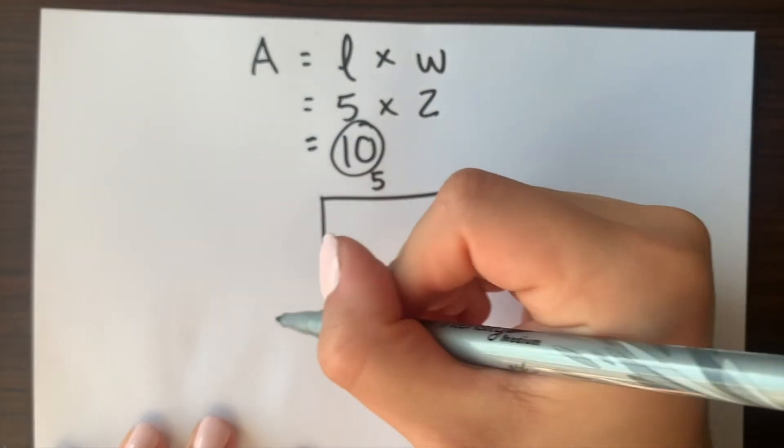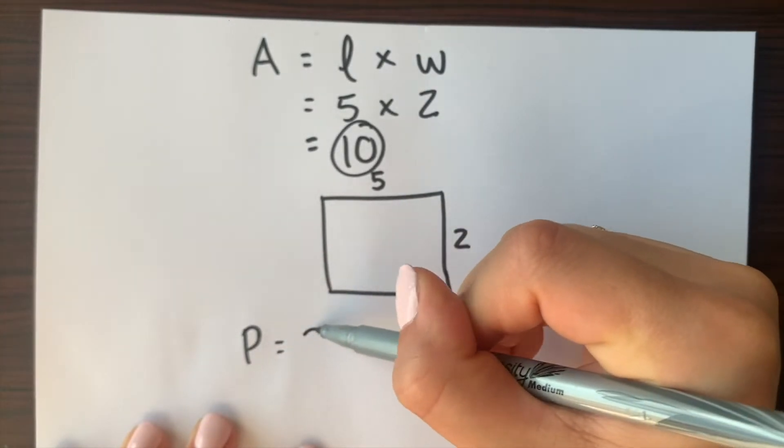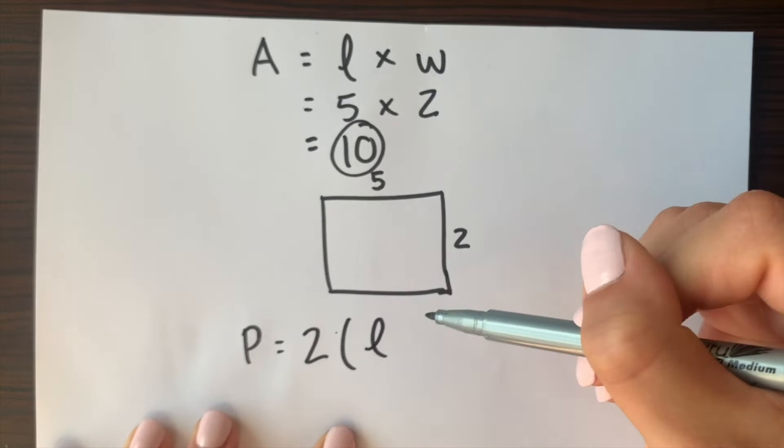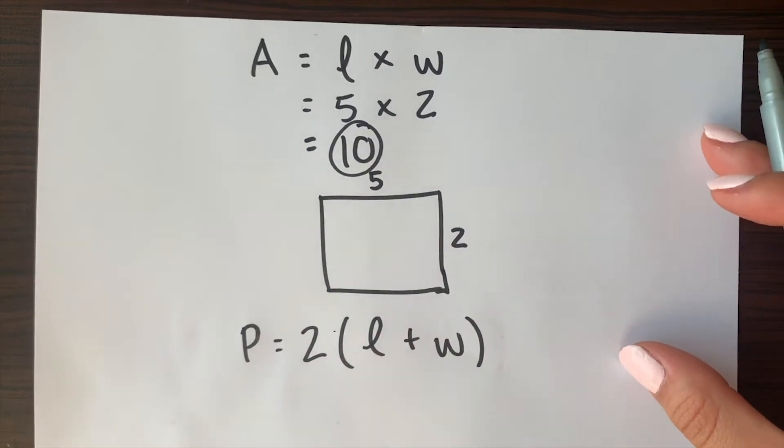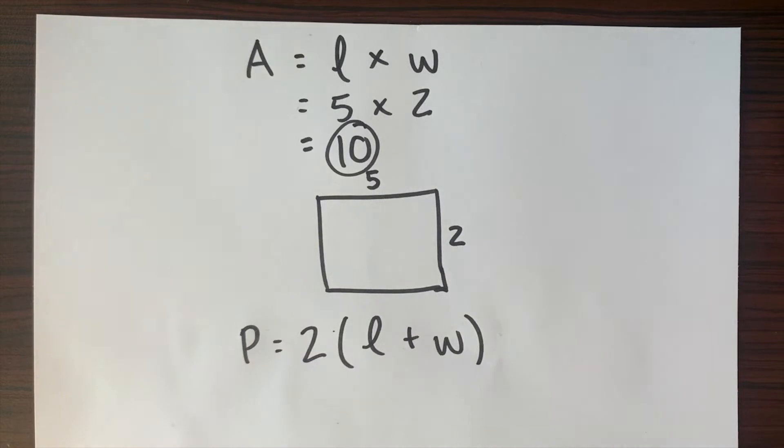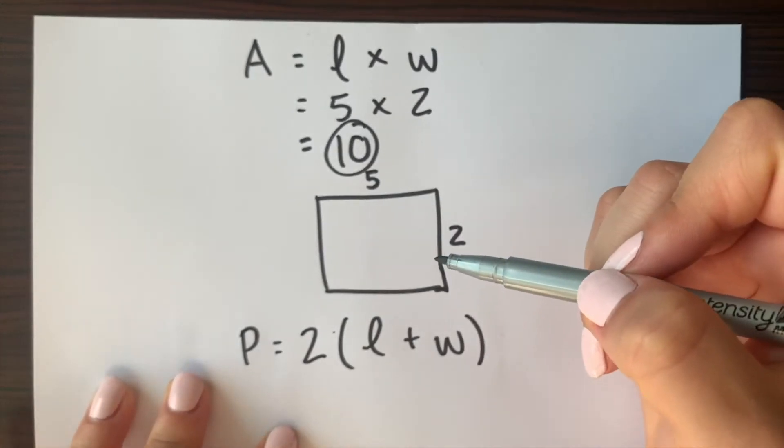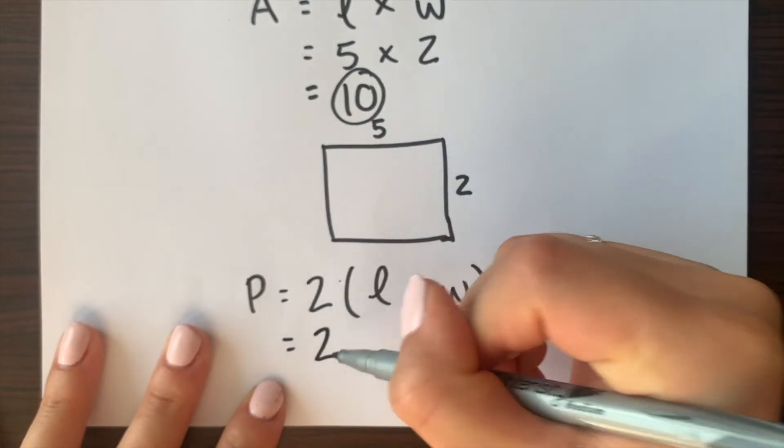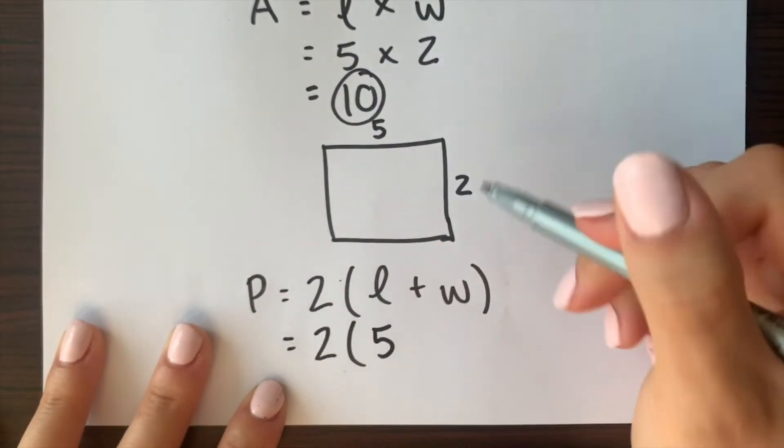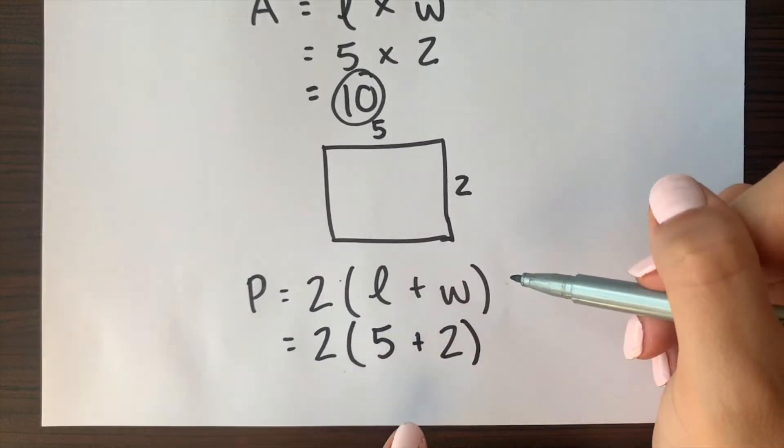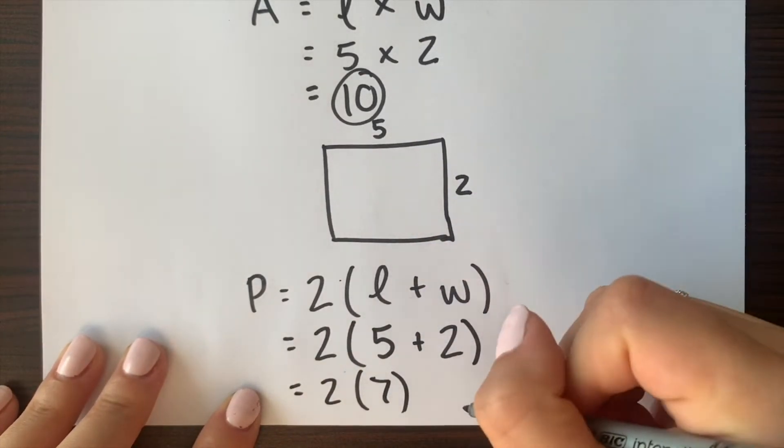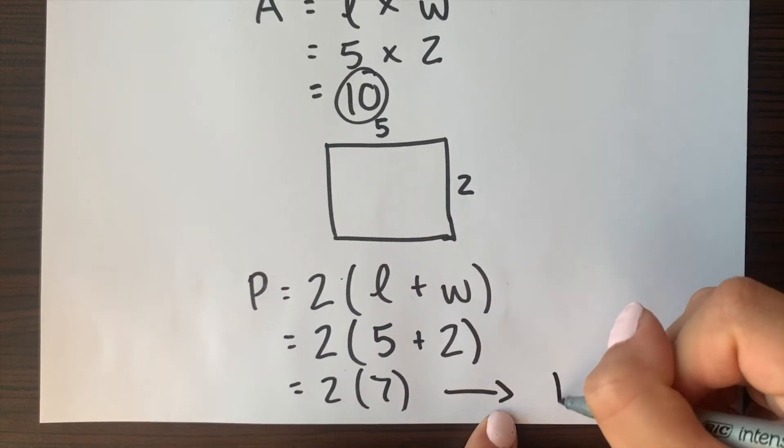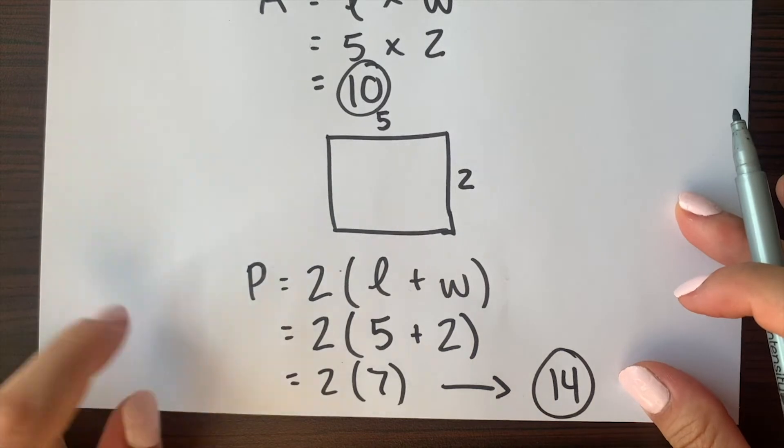Now to find the perimeter we have to do 2 times length plus width. It's always helpful to write down the equations so that you don't forget it and the more you write it the more repetitive it gets and the easier it is to remember them in the future. So we get our 2, plug in our length which is 5 plus our width which is 2. That gives us 7. So 2 times 7 equals 14. So our perimeter to this rectangle is 14.